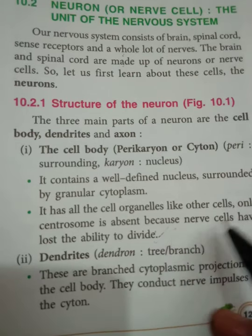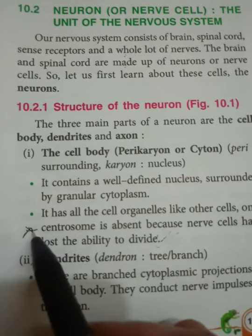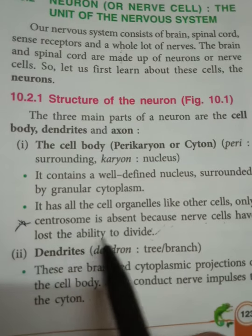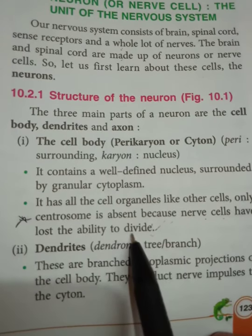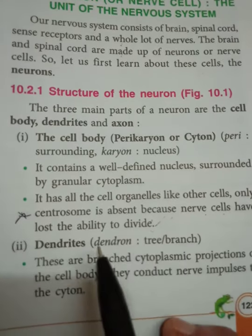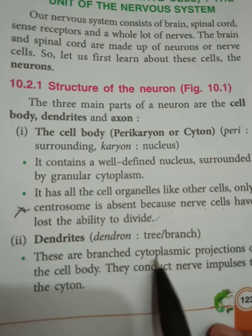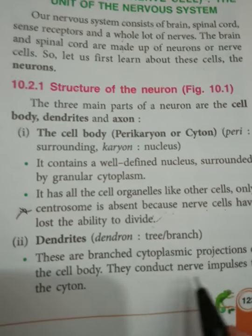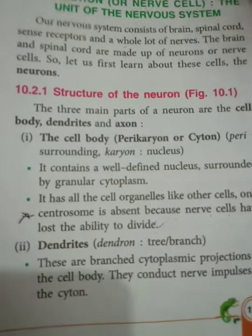Why is the centrosome absent in brain cells? Because neurons are not required to divide — the number of neurons we have at the time of birth is what we have throughout life. This is an important 'give reason' question. Dendrites are branched cytoplasmic projections of the cell body, and they conduct nerve impulses towards the cytone.